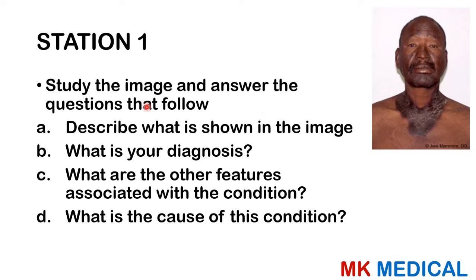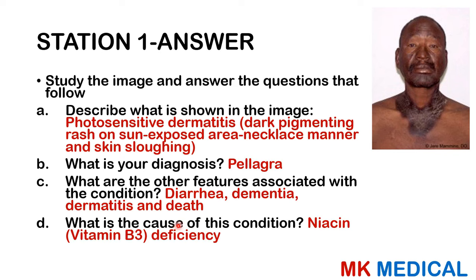Station one: study the image and answer the questions that follow. A) Describe what is shown in the image. B) What is your diagnosis? C) What are the other features associated with the condition? D) What is the cause of this condition? You may pause the video, have a look at the image, speculate, write down your answers. Here comes the answer: this individual has what is referred to as photosensitive dermatitis.